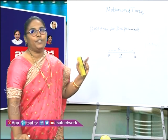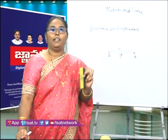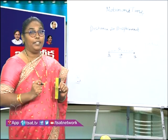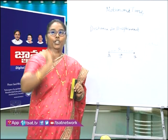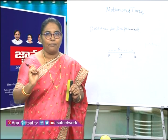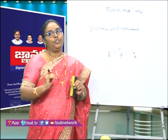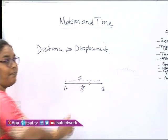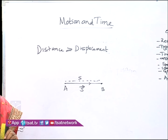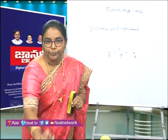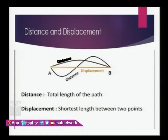We denote distance by the letter S and displacement by the letter S with an arrow mark on it. This indicates that distance is a scalar quantity — to describe it, only magnitude is enough. For displacement, we need both magnitude and direction. It is nothing but distance in a particular direction. Distance is the total length of path covered, and displacement is the shortest length between two points.